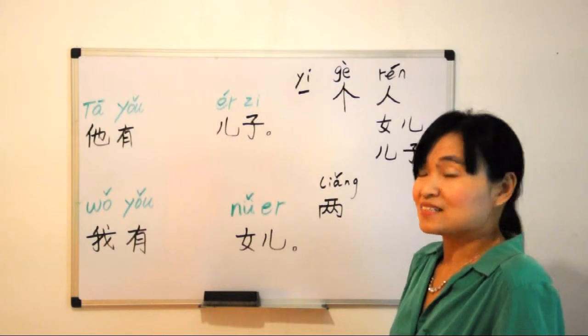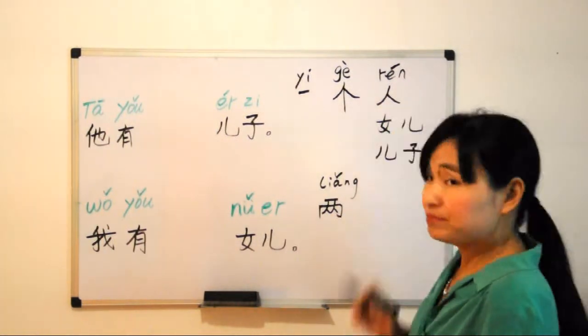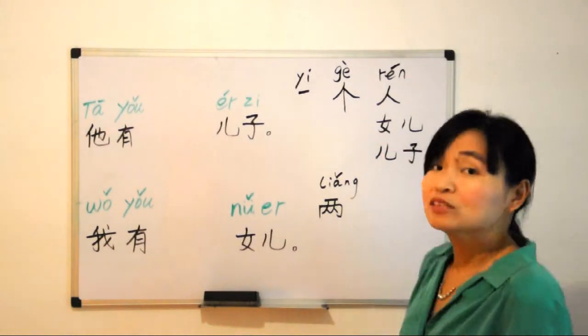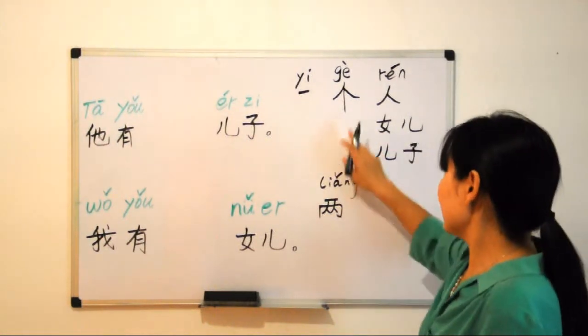So two persons: 两个人 (liǎng gè rén). Two daughters: 两个女儿 (liǎng gè nǚ'ér). Two sons: 两个儿子 (liǎng gè érzi).